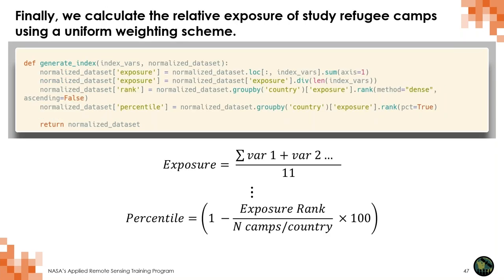After normalizing the data, we perform a simple index rank of each variable and then calculate the percentile of each camp within the distribution of camps. This allows us to say, for example, that a given camp is in the 90th or 50th percentile of exposure relative to all other potential camp locations for a given country. Because we've created relative exposure percentiles, we can show relative and absolute exposure for current locations of refugee camps as well as potential future locations for camp siting. We'll now switch over to the CoLab notebook.